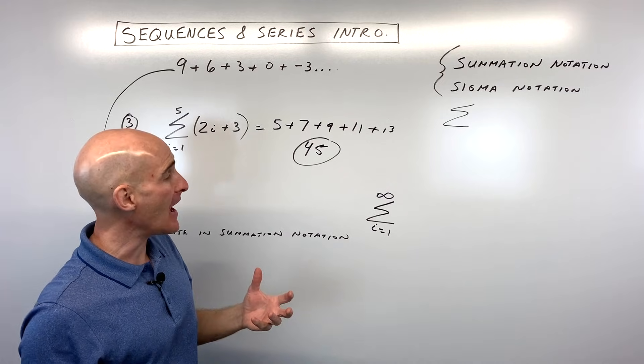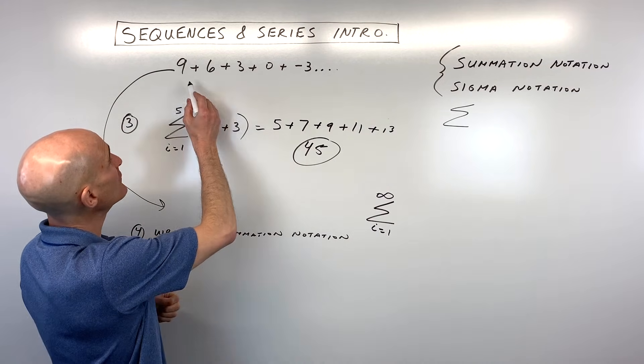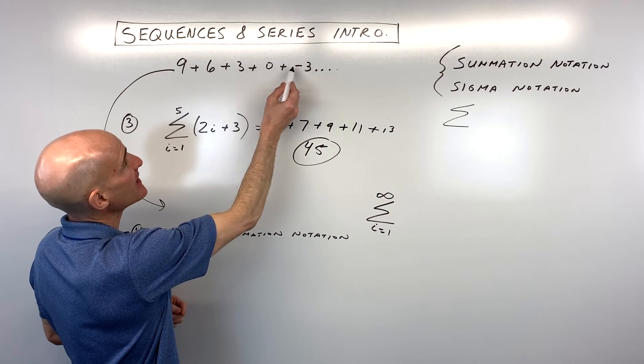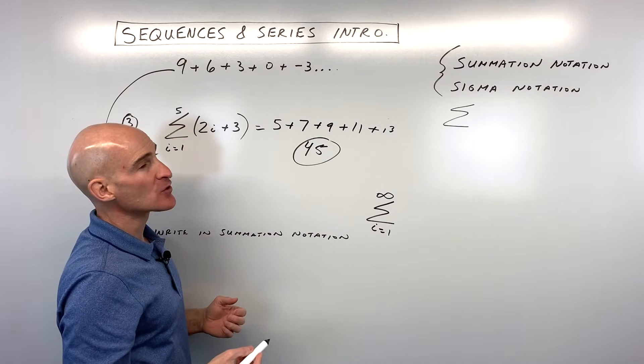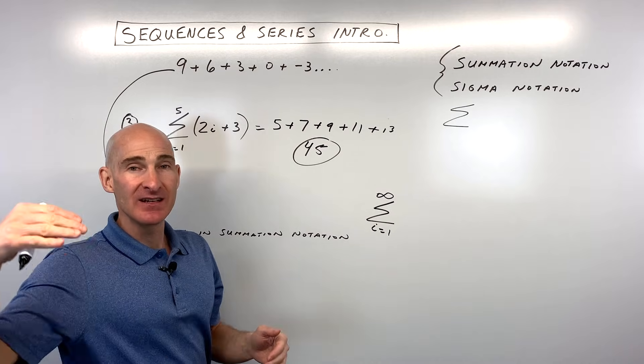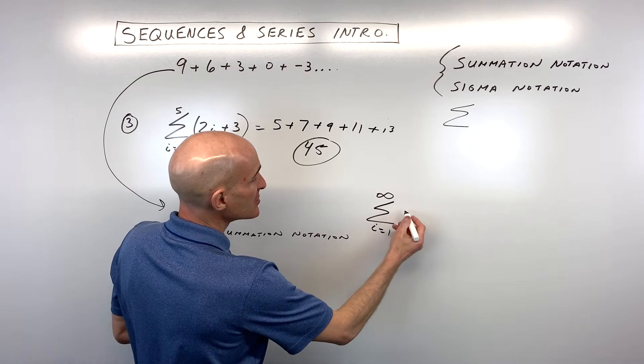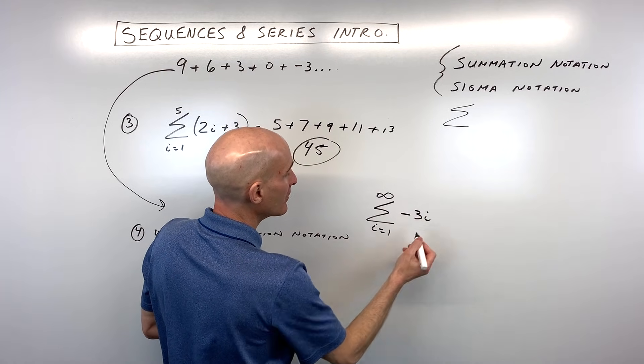But we need a formula or a rule for this pattern here. We haven't talked about the formulas yet. So what we're going to do is let's just see if we can figure out the pattern. It looks like we're subtracting three to get to the next term, next term, next term. So you can see because it's a constant decrease, I'm thinking linear. I'm thinking like a line and I'm thinking of a slope of negative three.